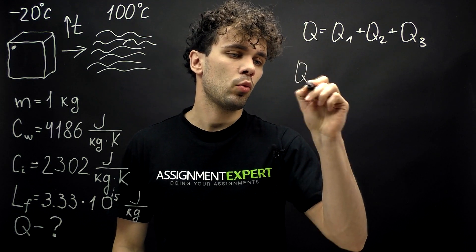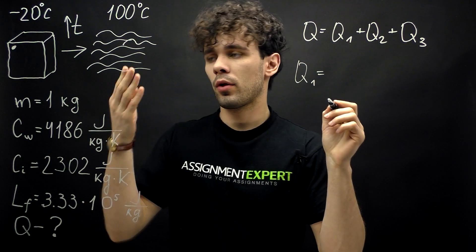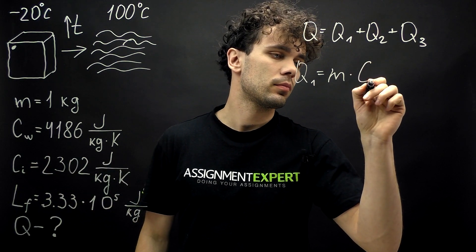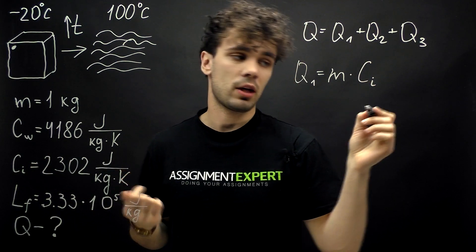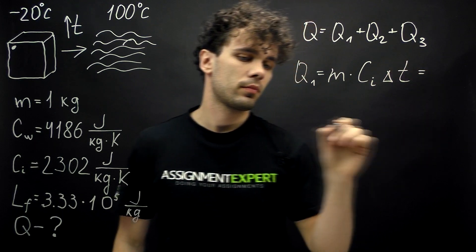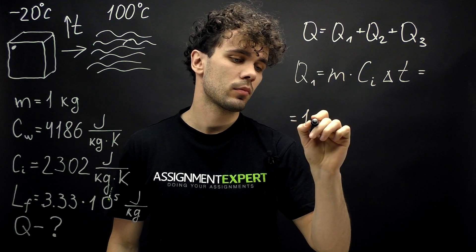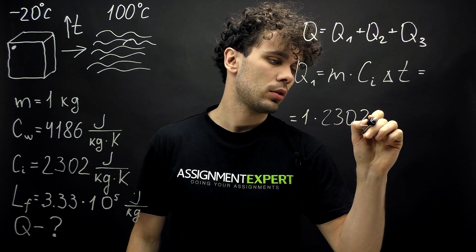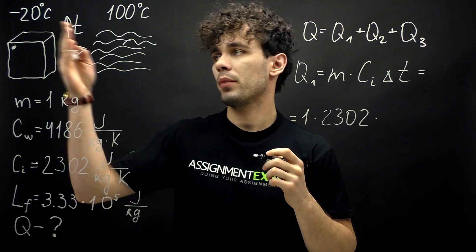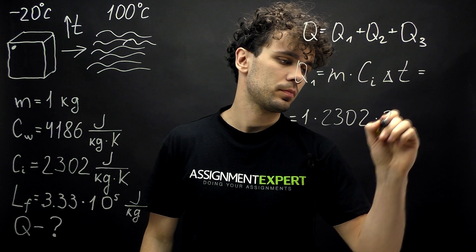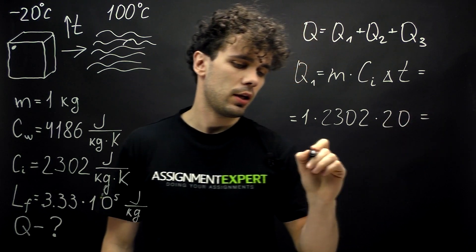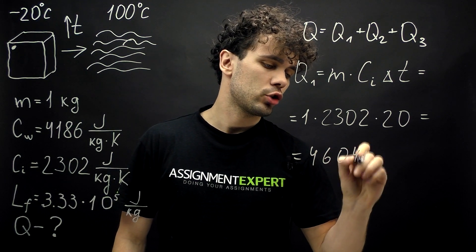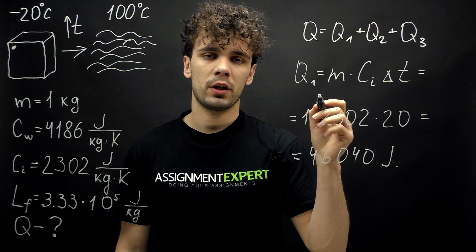Let's begin with the first one. Q1 equals the mass of ice — or water, they're the same here — times the heat capacity of ice, times the change of temperature, delta T. Our mass is 1, the heat capacity is 2300, times the change of temperature. We go from negative 20 to zero degrees Celsius, so the change is 20 degrees Celsius. This gives us 46,040 Joules.